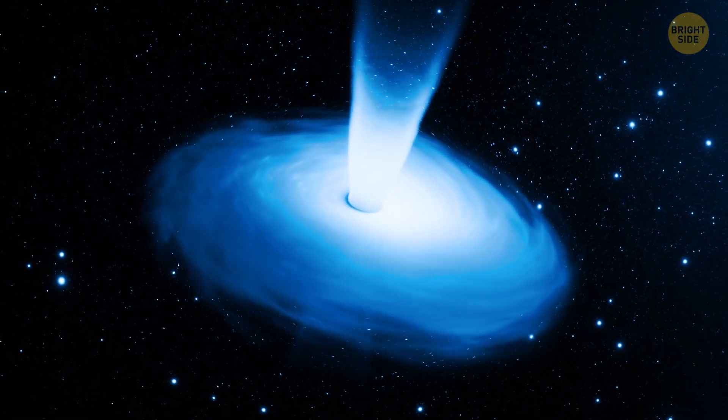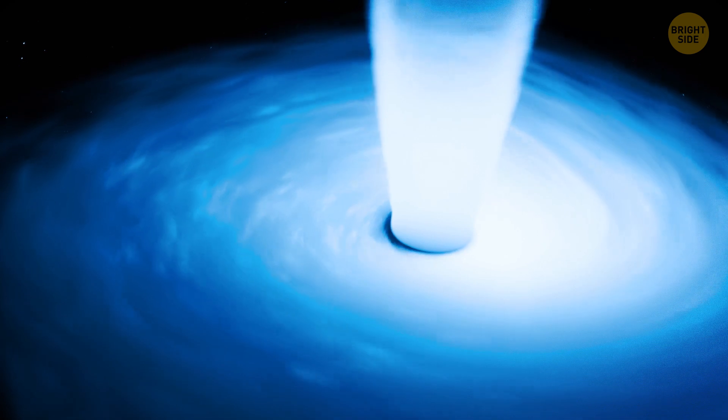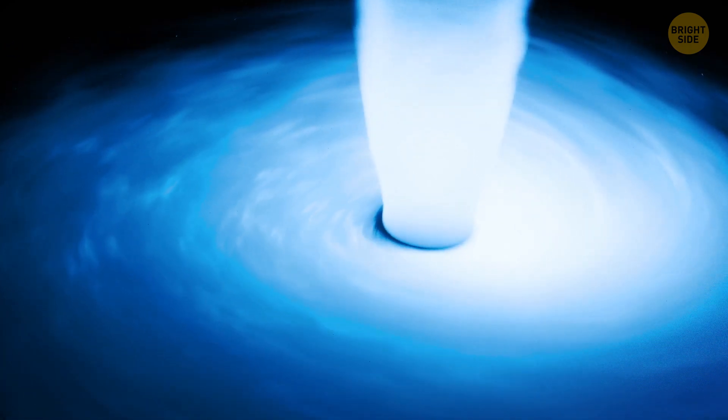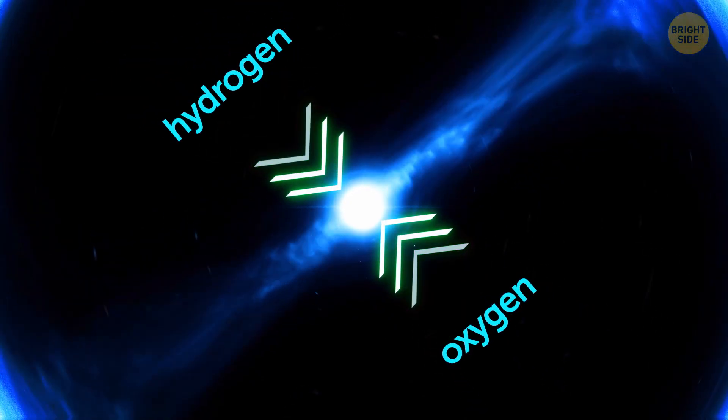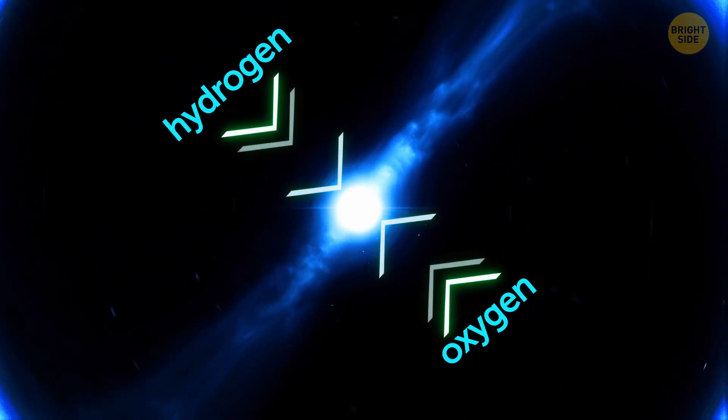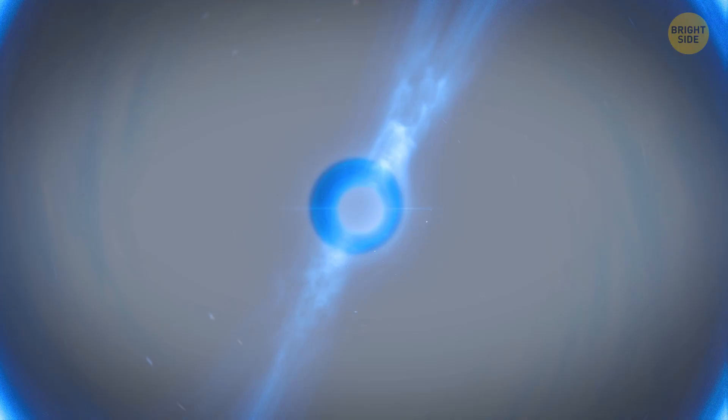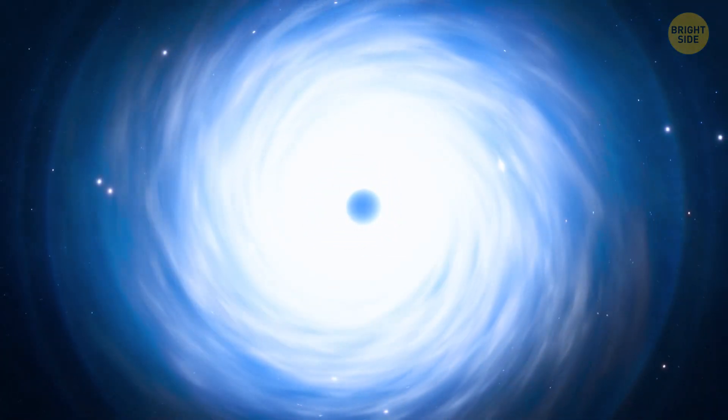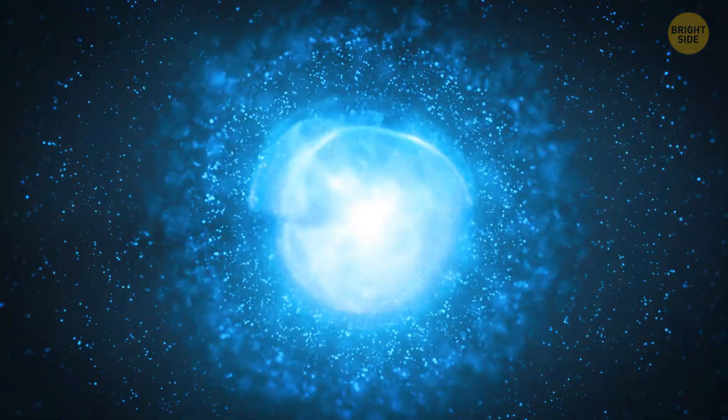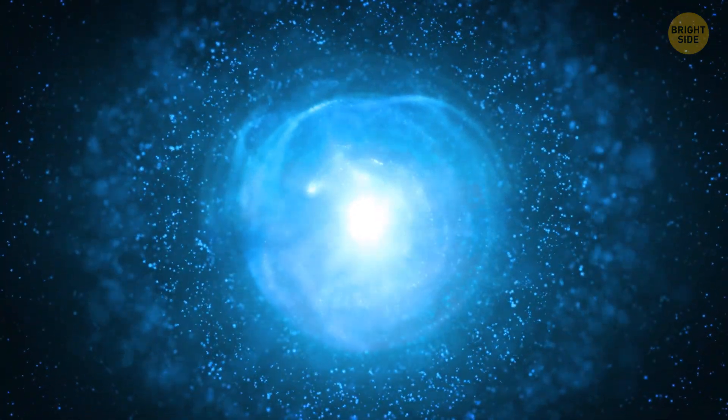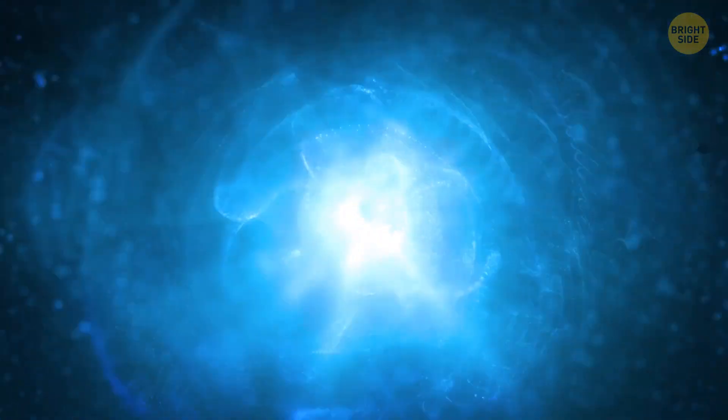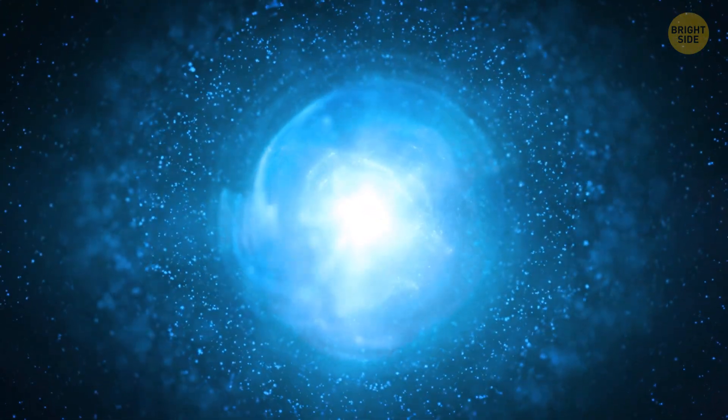The environment around the quasar must be unique to somehow produce such giant masses of water. It was formed by energy waves colliding hydrogen and oxygen atoms together. The cloud contains 140 trillion times the entire volume of water on our planet. It could provide each person on our planet with a planet's worth of water 20,000 times over. Wow.